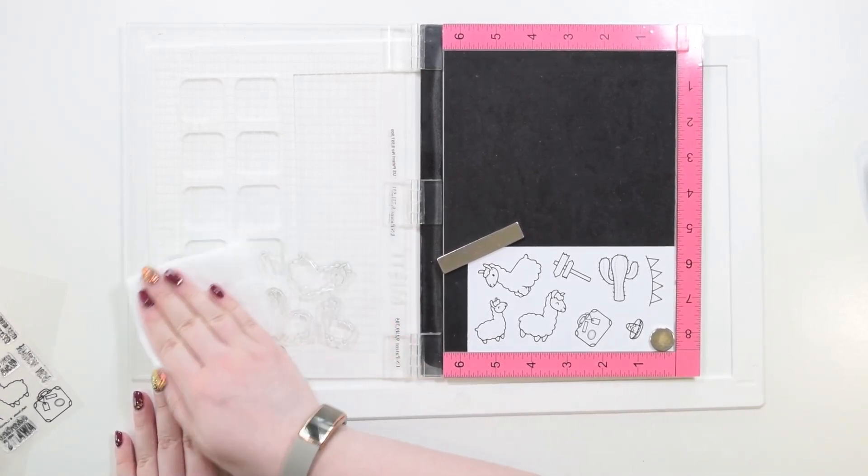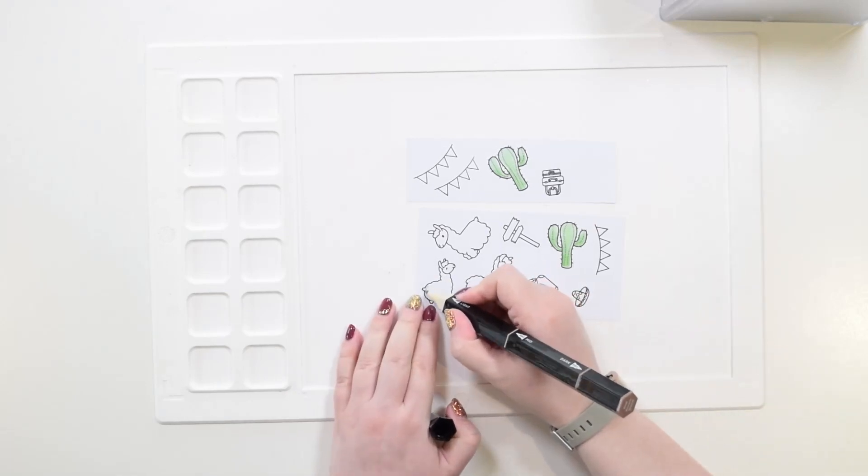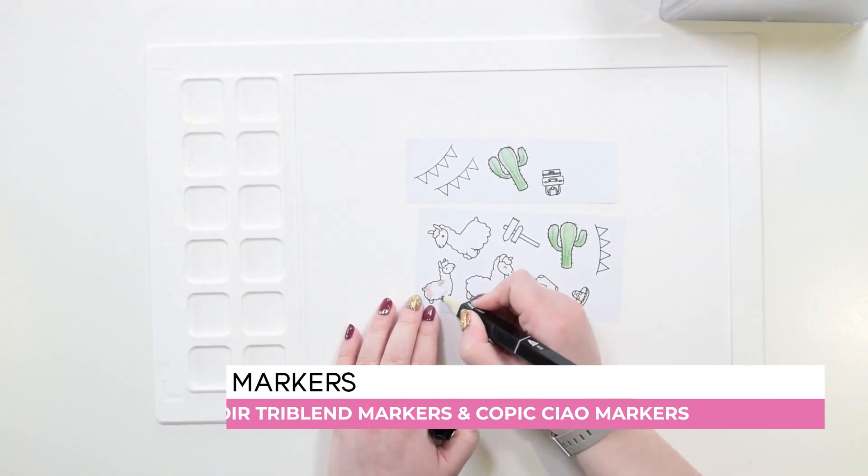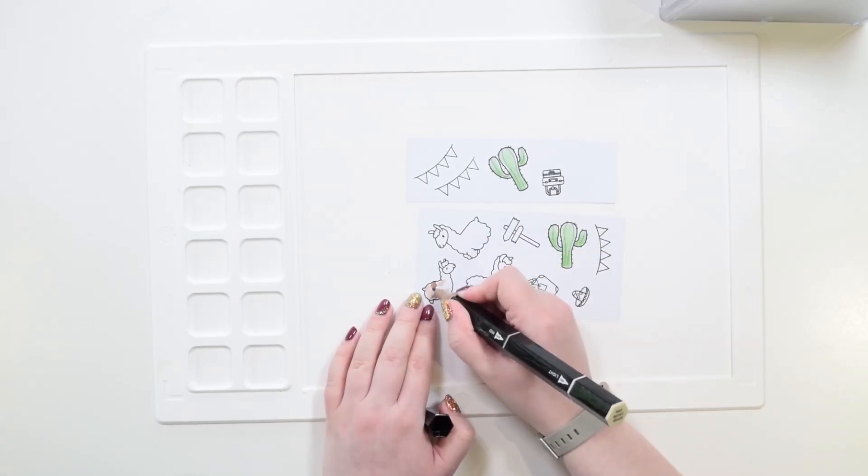Now the fun part: coloring everything in. Today I'm using a combination of Spectrum Noir Tri-Blend markers and some good old Copic markers. I really like playing with both types of marker for some different looks and their different color ranges.